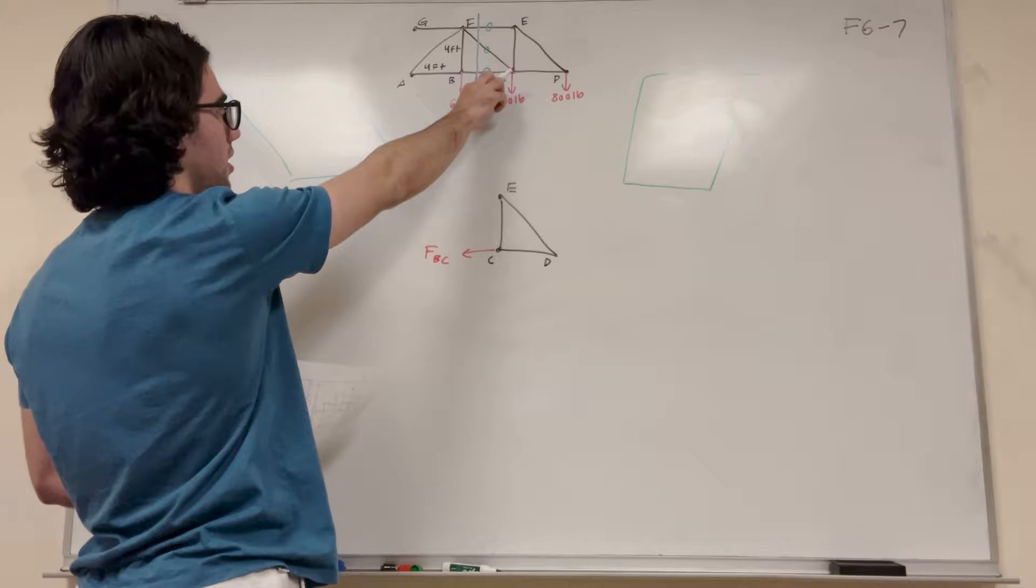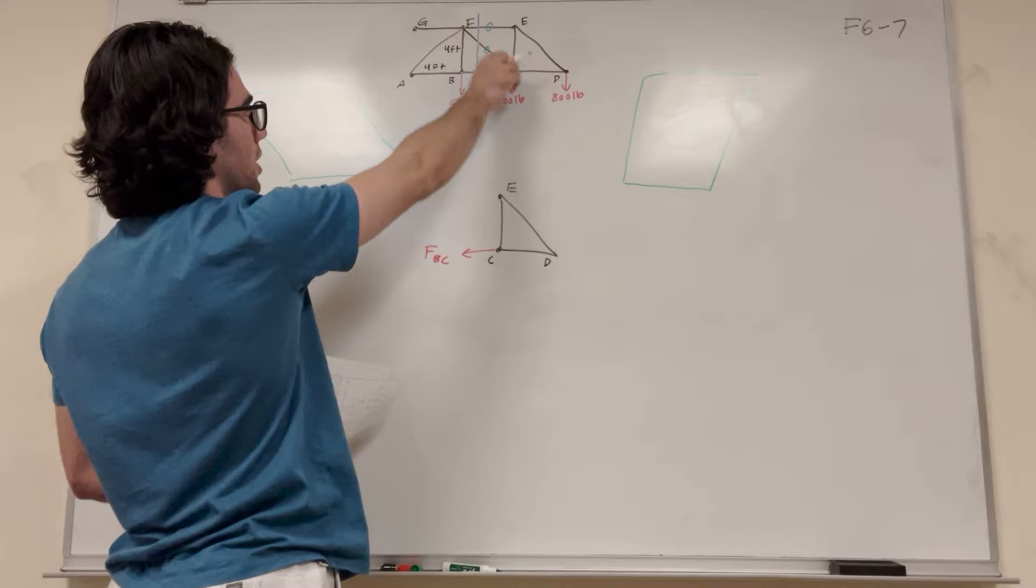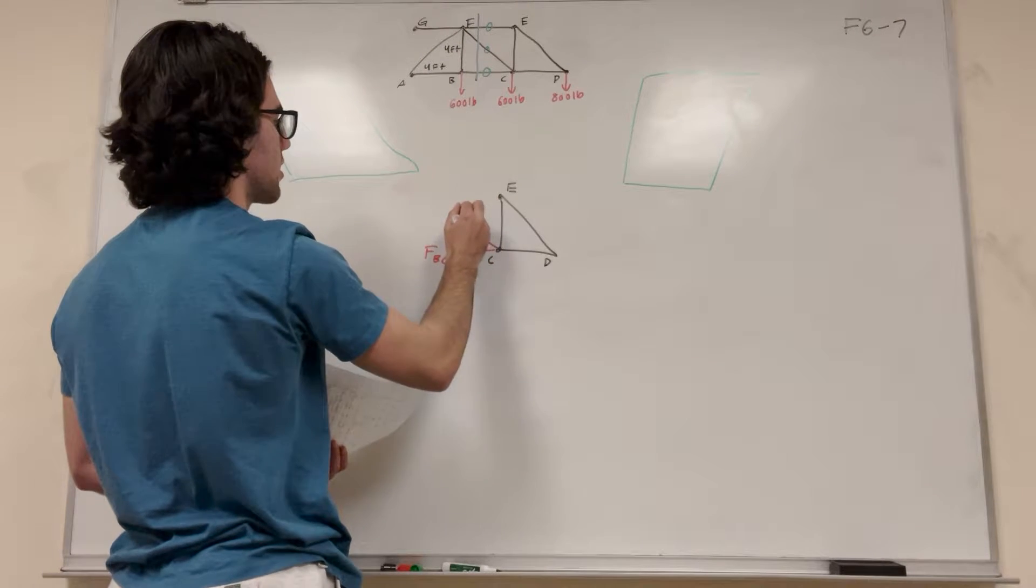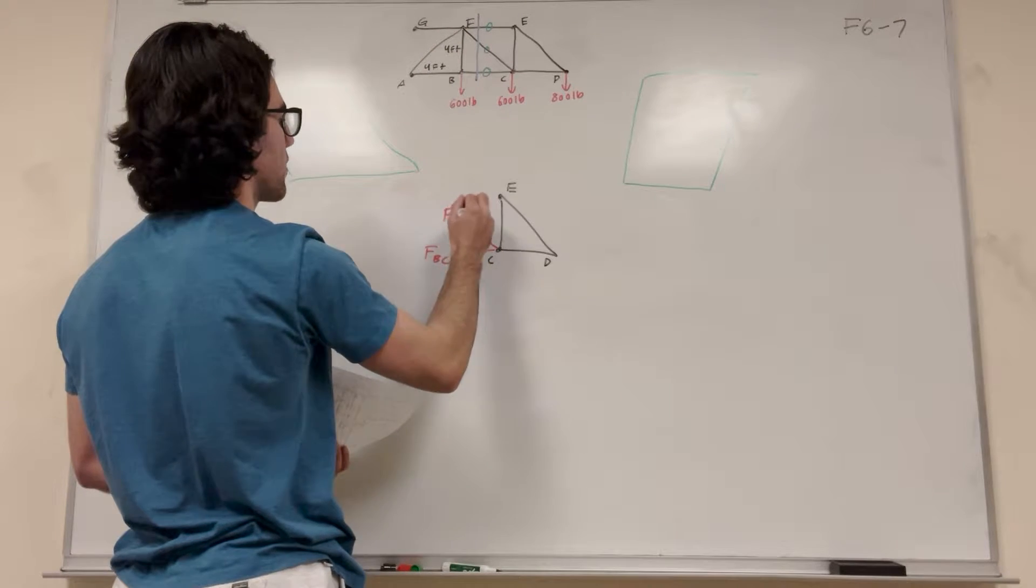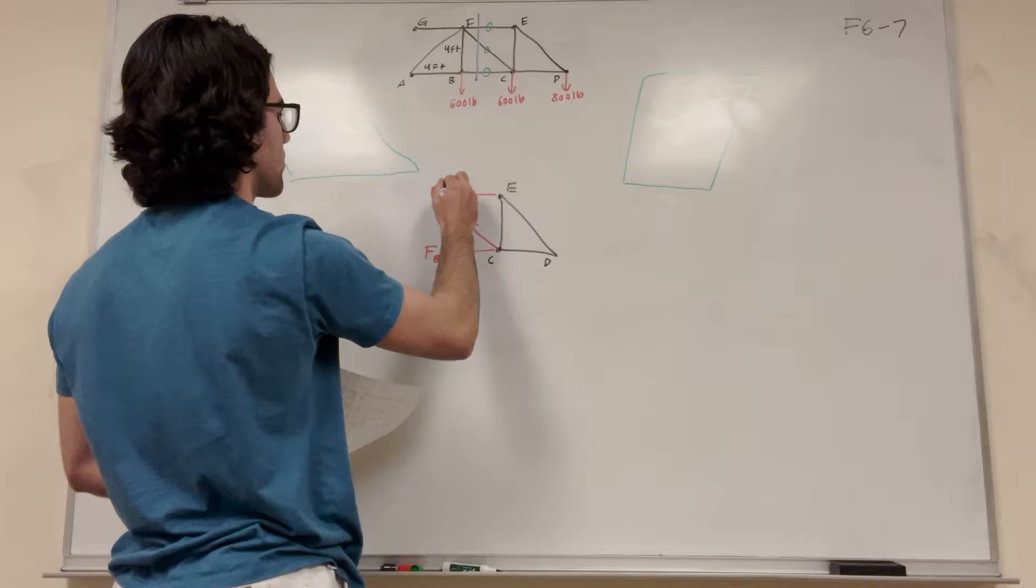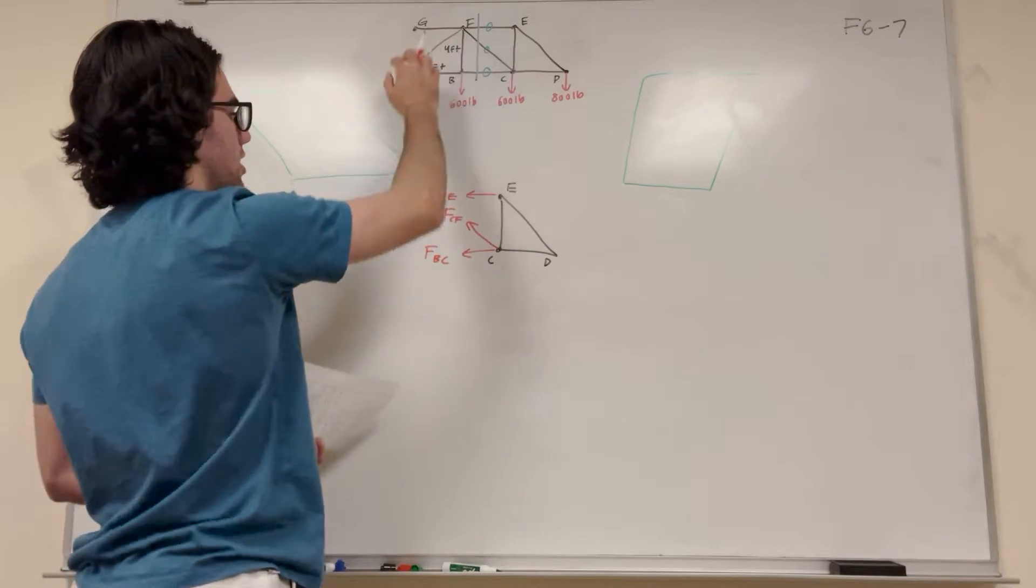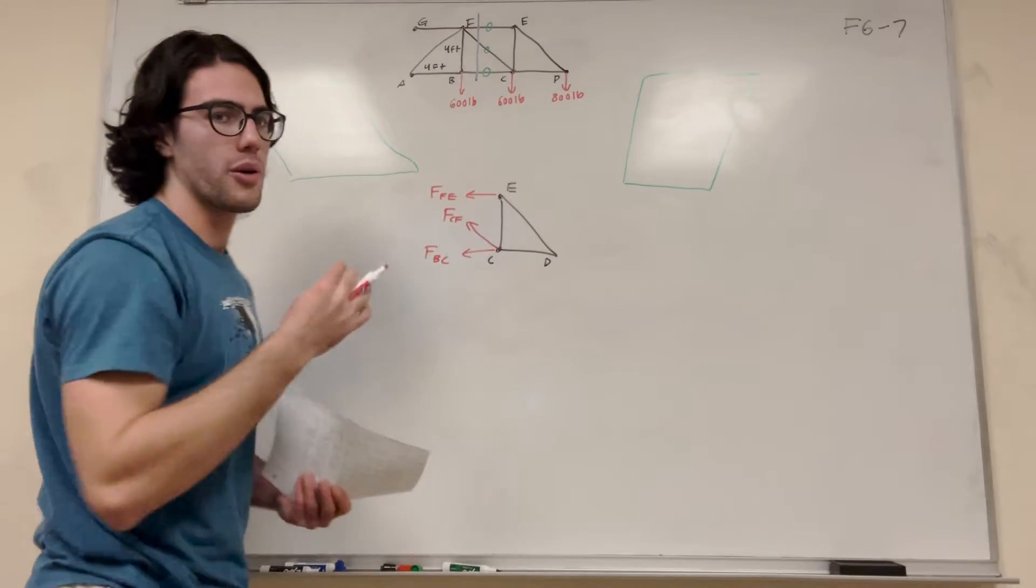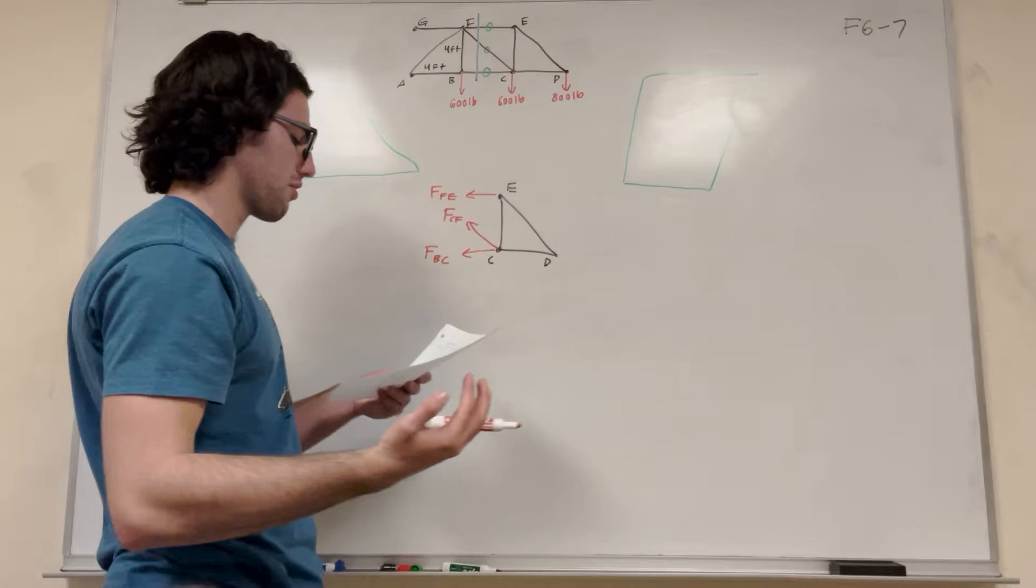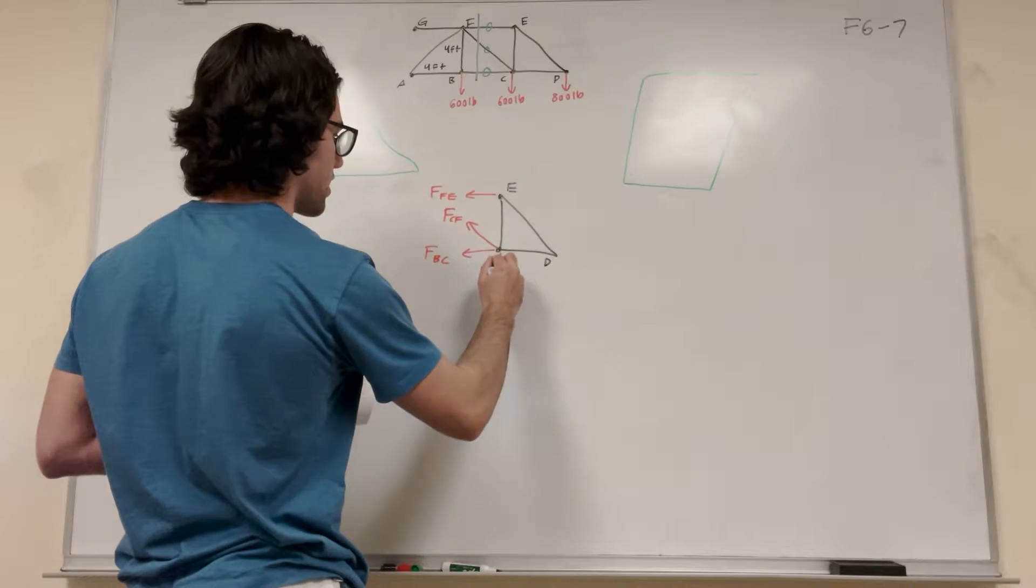It already has this force here, but instead it's just this tension force pulling this way. So then CF becomes this, FCF, and then FEF becomes this. So now instead of all of this, we just have these three forces showing tension.